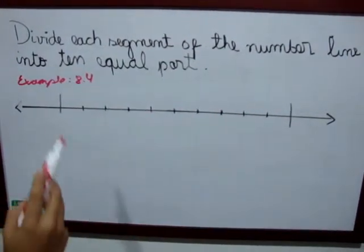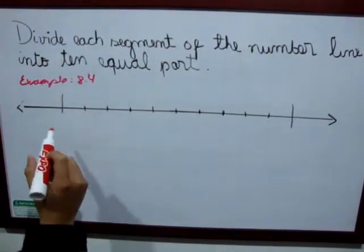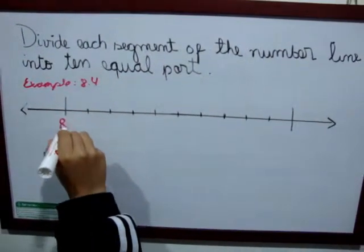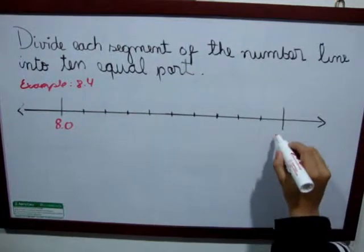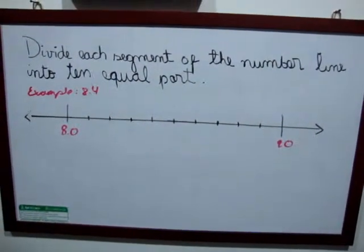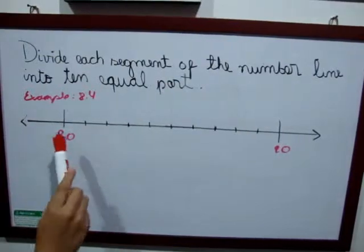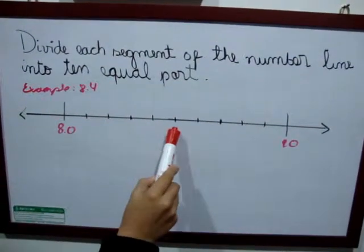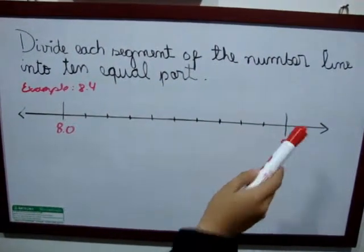We divide the segment - that is 8 here and 9 here. And then we put it in tens: 1, 2, 3, 4, 5, 6, 7, 8, 9, 10.